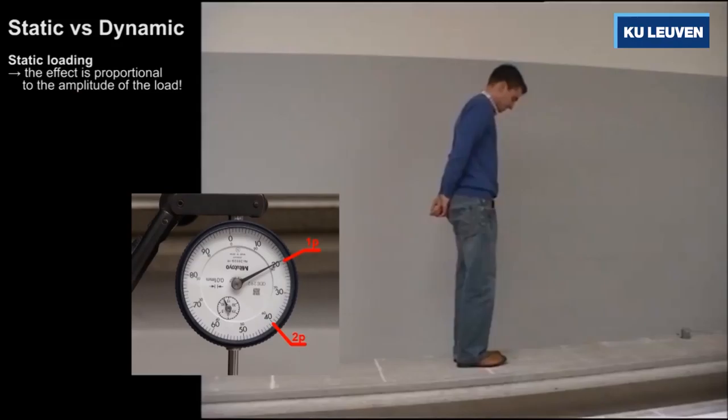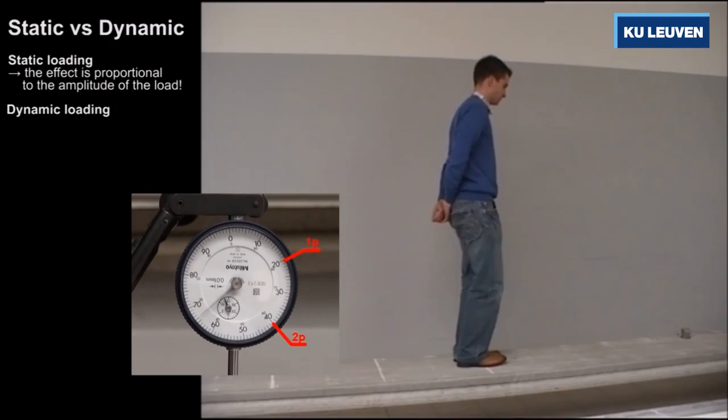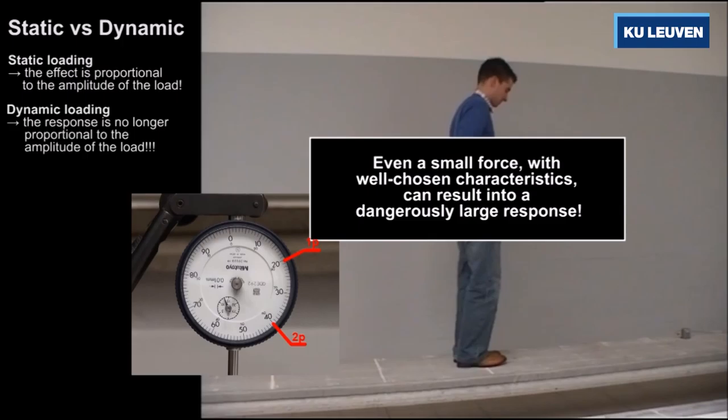Let us remember those two levels on the dial and compare them to what happens when the person is no longer standing still, but will move gently up and down. In this case, you can see that the amplitudes of the vibrations are significantly larger than the initial static deflection. This small experiment shows that even a small force with well-chosen characteristics can result into a large and sometimes even dangerous response.